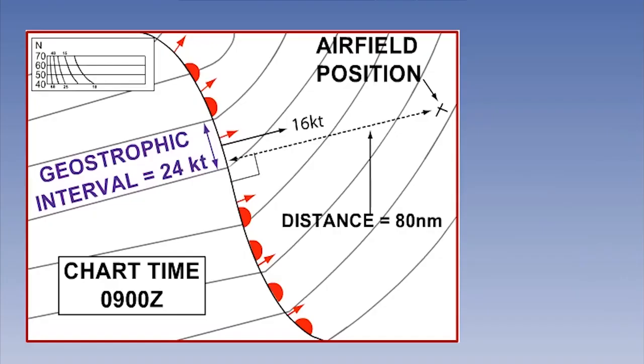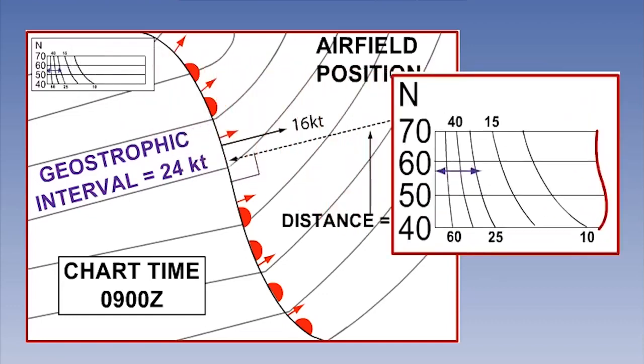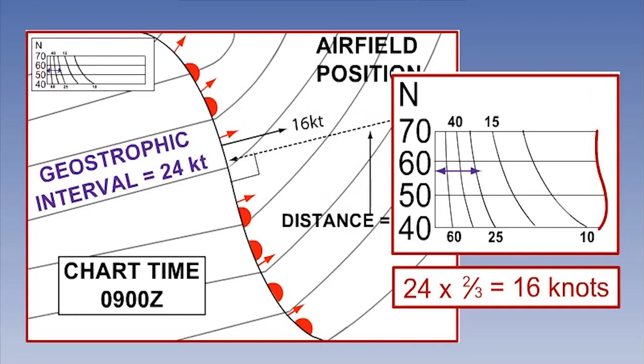The speed of movement of a warm front can be estimated using a simple technique. All you need is a weather chart with a geostrophic wind scale on it. Measure the isobaric spacing on the front like this. Use that measurement on the geostrophic wind scale, and then multiply the answer by two thirds. This gives the approximate speed of the front in the direction of the isobars behind the front itself.